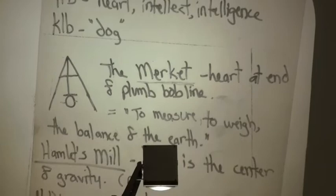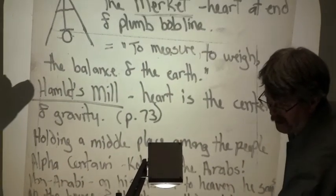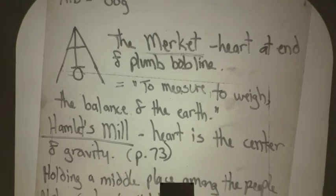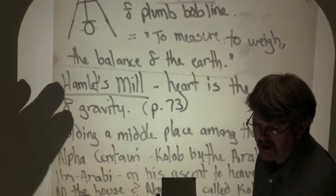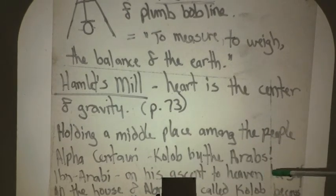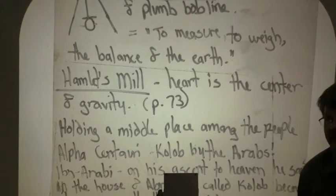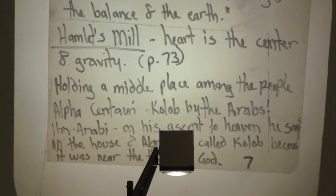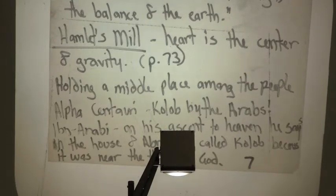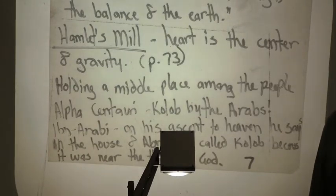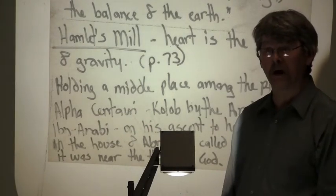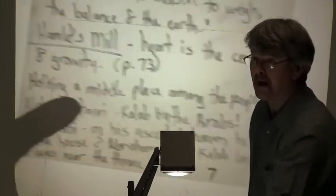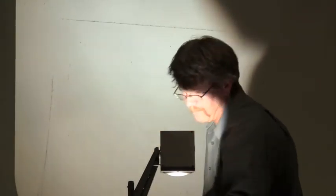It holds a middle place among the people of Centauri. And Ibn Arabi, I had to write this down because I couldn't type it out. Ibn Arabi on his, now get this, on his ascent to heaven, this Arab mystic says in the house of Abraham it's called Kolob because it was near the throne of God. Joseph Smith didn't have Ibn Arabi. That's a perfect description of how Joseph Smith called Kolob. But you could have guessed all that, couldn't you? Yeah, well the anti-Mormons can, but sure brother.